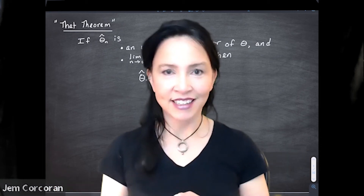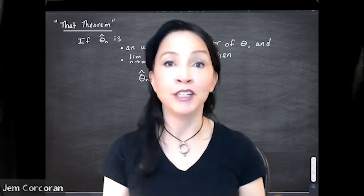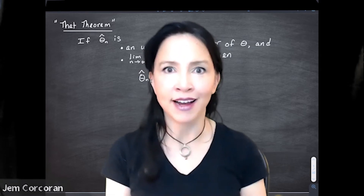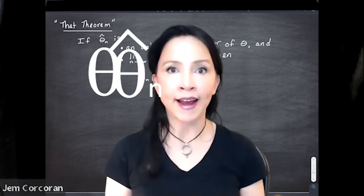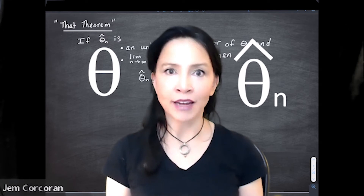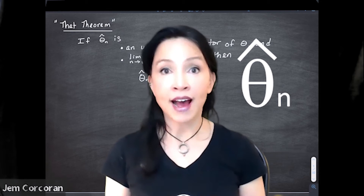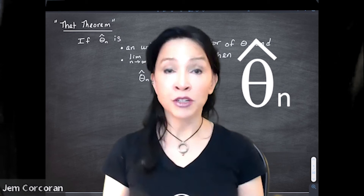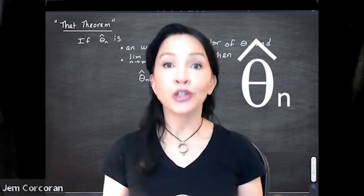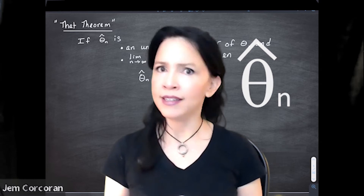Welcome back to Mathematical Statistics. In this lesson, we're going to prove something that I know you've wanted to be true for a really long time. Suppose we're trying to estimate a parameter theta with an estimator theta n hat. This is a random variable, and it's going to be a good estimator if it has certain properties. One of the properties we've talked about is that our estimator theta n hat gets closer to theta as our sample size gets large in some sense.